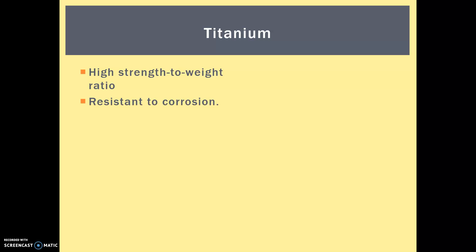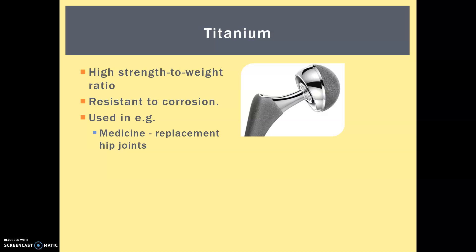Titanium is a metal with an amazing high strength-to-weight ratio and it's resistant to corrosion. It's used in a variety of new fields, including medicine — for example, as replacement hip joints. They are biomechanically non-reactive, so that means they don't interfere with any processes in the body. They can even be made as a metal foam to reduce the weight.